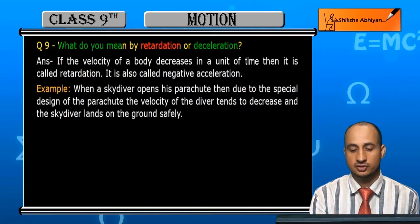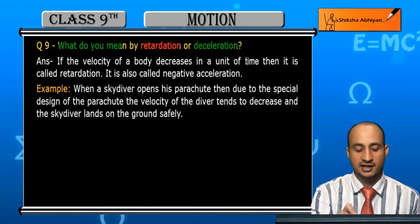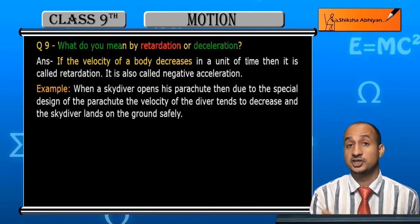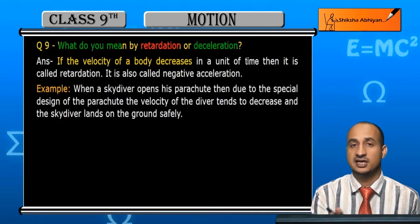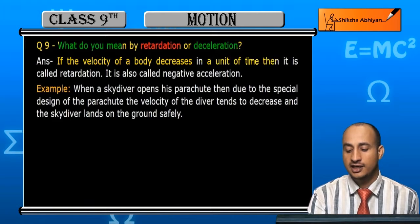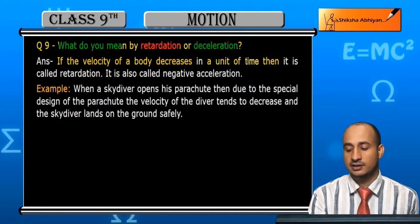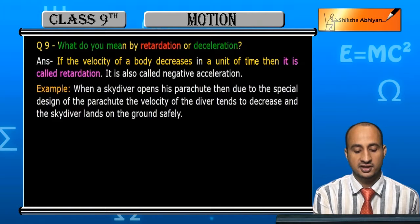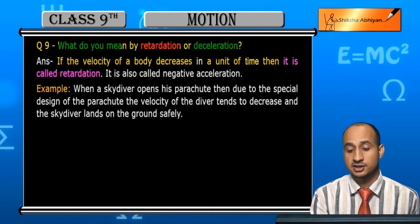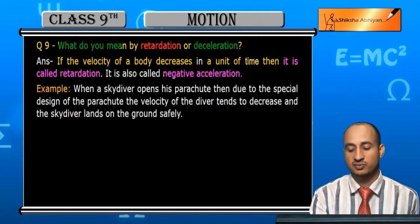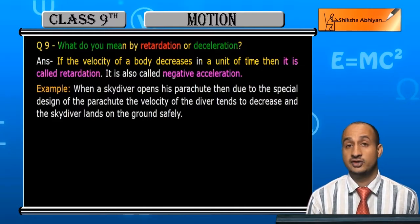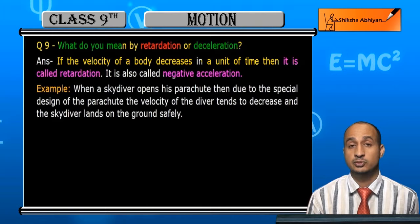Retardation and acceleration are the same thing. If the velocity of a body decreases in a unit time, then it is called retardation. Retardation is called negative acceleration. If the velocity of a body is decreased with respect to time, then it is called retardation or de-acceleration.